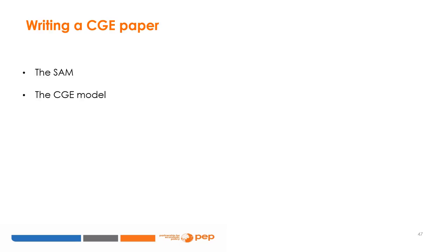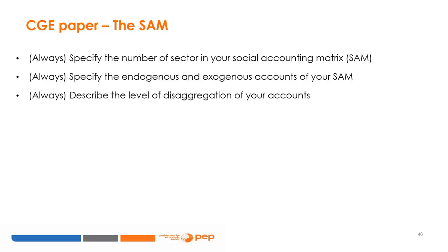In CGE modeling, writing the conceptual framework involves two main steps: one, the description of the social accounting matrix (SAM); two, the description of the SAM-based general equilibrium model. The SAM is often viewed as both a data-gathering framework and an analytical tool for studying the effects of various macroeconomic policies — a popular tool for mapping production and distribution at the economy-wide level. In describing your SAM, specify the sectors (e.g., is the informal sector accounted for?), describe what is new about your SAM (e.g., the level of disaggregation), and describe the endogenous and exogenous accounts and their level of disaggregation (e.g., how are households classified and disaggregated at the national, regional, or sub-regional levels?).